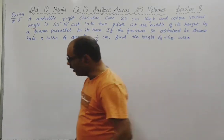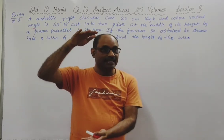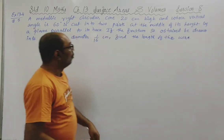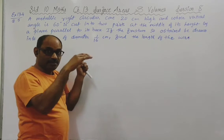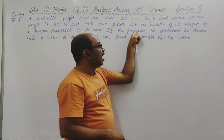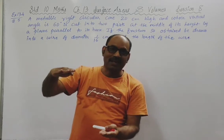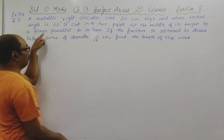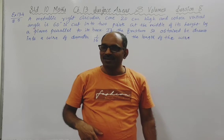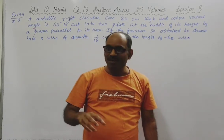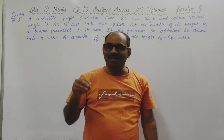Here is the statement: A metallic right circular cone 20 centimetres high, and whose vertical angle is 60 degrees, is cut into two parts at the middle of its height by a plane parallel to the base. The original cone is divided into two parts - the top part is still a cone and the bottom part is the frustum of cone. The volumes are not equal even though we cut from the middle.